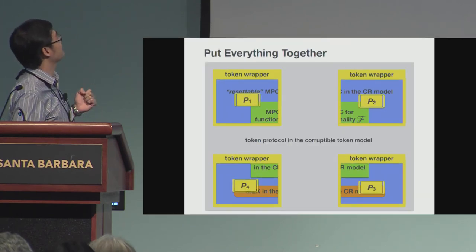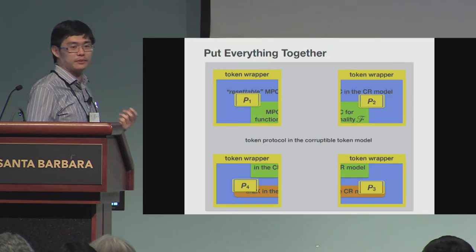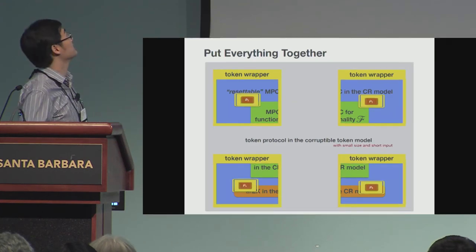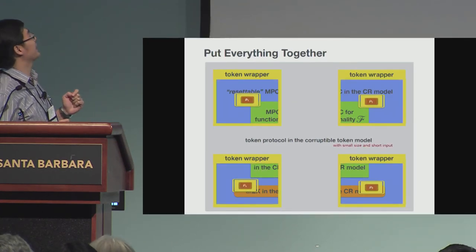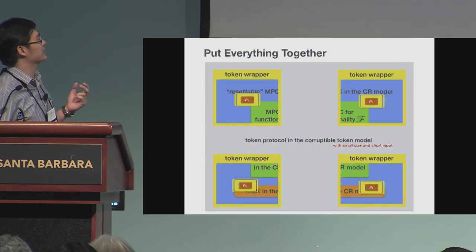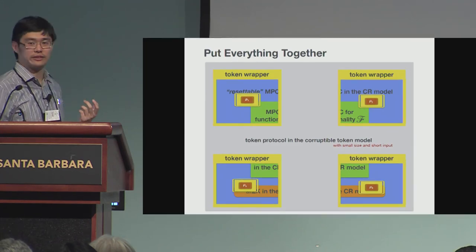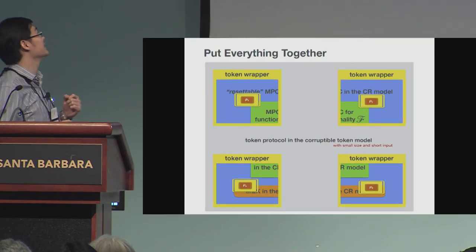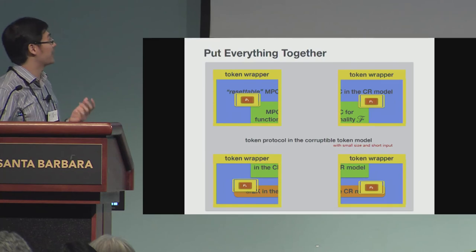Finally, we have the token protocol in the corruptible token model. The final step is to reduce the size of this token — to have a small program description that only takes short input. This is also an interesting contribution by itself.